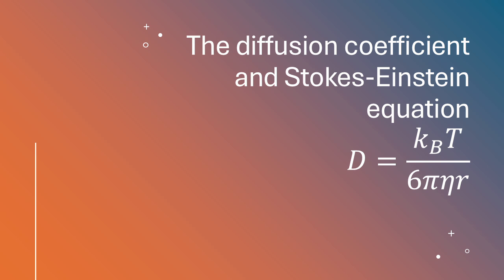And this precise targeting has huge potential for treating diseases in a more effective and less invasive way. We can minimize side effects because the medicine is only going where it's needed. That's incredible. But I'm guessing there are challenges, right? The human body is a pretty complex environment. You're absolutely right. The Stokes-Einstein equation gives us a great starting point, but it does have limitations, particularly when dealing with the complexity of biological systems.